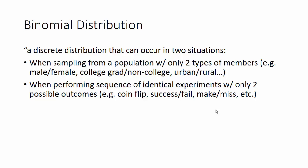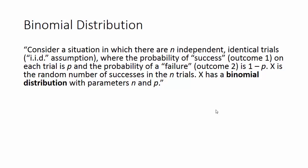Here's how we set up binomial distribution situations. Consider a situation with n independent, identical trials — this is known as the IID assumption: independent identically distributed variables. The probability of success on each trial is p, and the probability of failure is one minus p. That's exhaustive — we've covered all possible outcomes in just those two options. X is the random number of successes in the n trials.